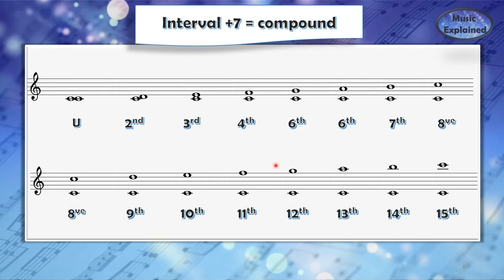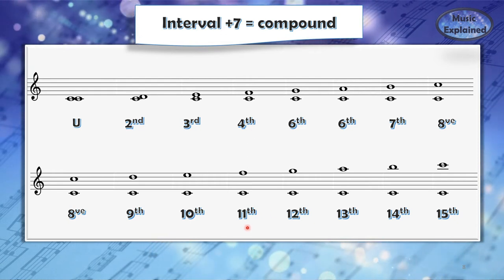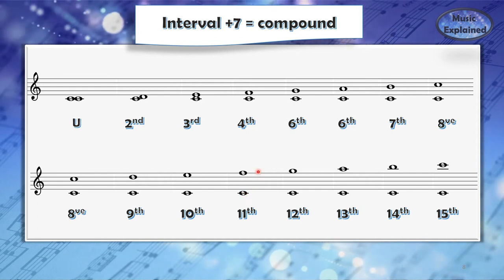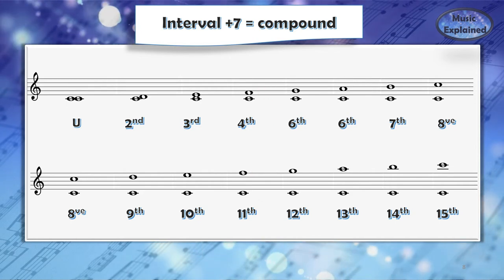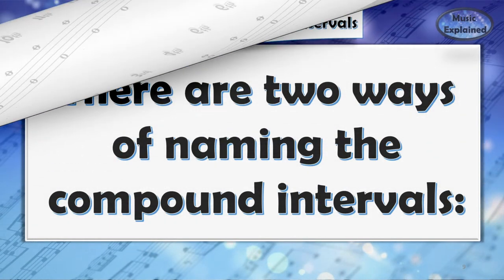And just to be clear, plus seven means an octave higher. For example, right here we have C-F, and if you look down we have C-F an octave higher than the previous one.